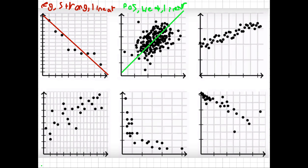What is an outlier? Well, an outlier is something that is super far away from the line of best fit. So, for example, maybe this here is an outlier, or maybe this here, or even maybe this guy here. So those are all outliers. And if there are any outliers, I'm going to circle them. Those are the outliers — the ones that are super far away from the data set.